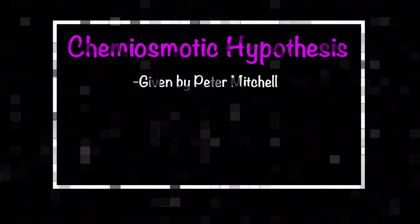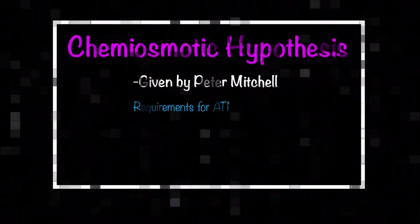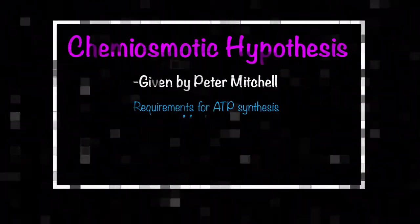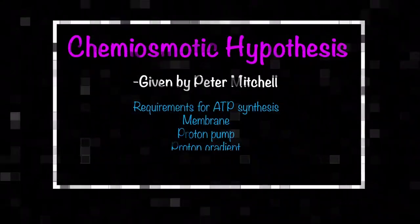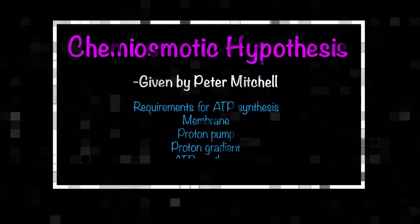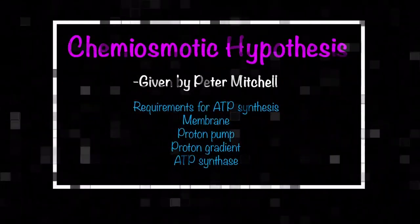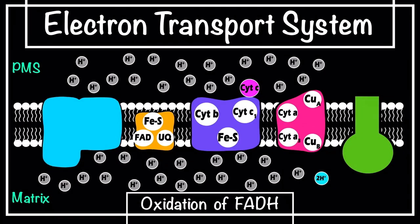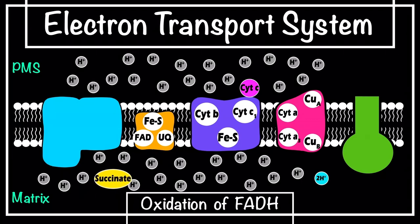The mechanism for ATP synthesis was given by Peter Mitchell and is called the chemiosmotic hypothesis, in which he stated that there are four basic requirements for ATP synthesis: first, a membrane; second, a proton pump to generate the flow of protons; third, a proton gradient; and finally, the ATP synthase enzyme.